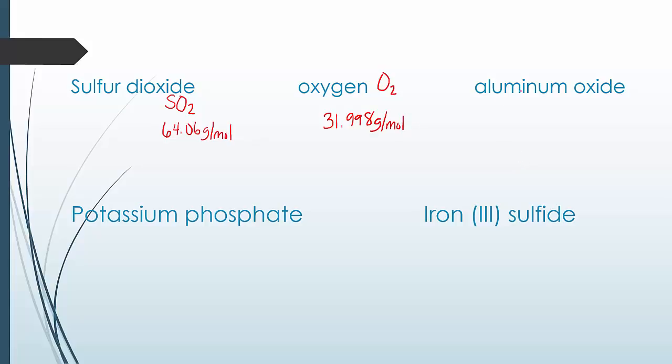This is why last unit was so important, because if you get the formula wrong, you're going to get the molar mass wrong. So aluminum, we know it's a plus 3, oxygen is a minus 2. So we're going to have to balance it, which means I need to have 2 aluminums and 3 oxygens. So on the periodic table, each aluminum is 26.998, take 2 of those. Each oxygen is 15.999, take 3 of those, add it up.